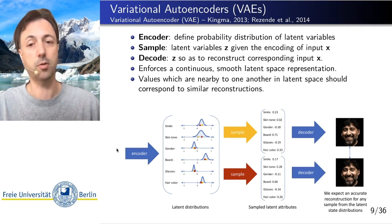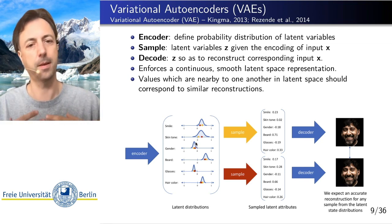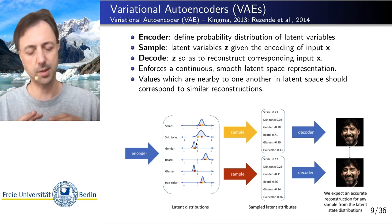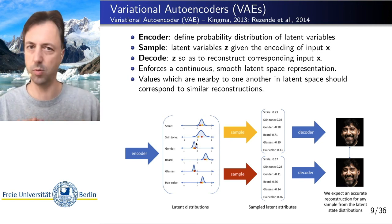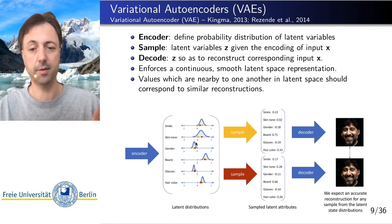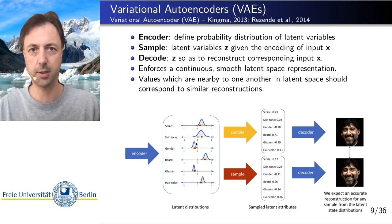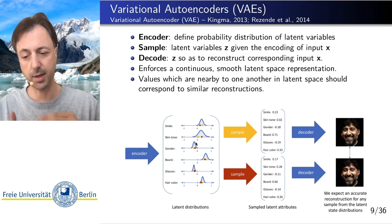Since we minimize the reconstruction error of the input and output images, if we sample nearby points in latent space, we expect to get similar outputs — similar to each other and similar to the input. A variational autoencoder thus produces a smooth latent representation: the encoder and decoder are regularized such that if you move a little bit in latent space, you get similar outputs after decoding. This is not the case with a normal autoencoder, where two nearby latent space points can give rise to completely different images, or two very similar images can map to completely different latent space points. In a variational autoencoder, we try to avoid that and make the latent space smooth.